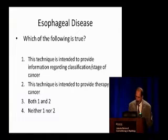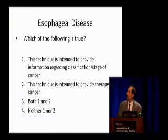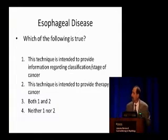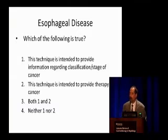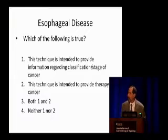We'll do another ARS — see how we do with that one. Which of the following statements is true? Number one: this technique is intended to provide information regarding classification or stage of the cancer. Number two: this technique is intended to provide therapy for cancer. Number three: both one and two. Number four: neither one nor two.